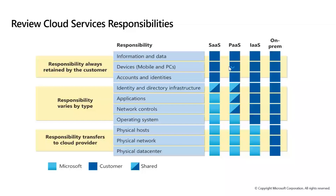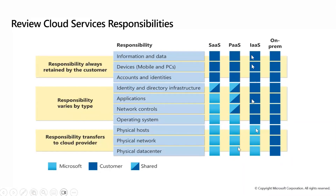On-premises means you take care of everything: physical data center, physical network, physical host, operating system. But in IaaS, the physical host, network, and data center are maintained by Microsoft. On top of that, you choose the operating system — Windows or Linux — set up virtual networks, configure virtual network peering, connect third-party tools, and manage application registration and users in Active Directory.